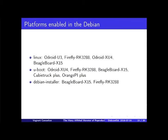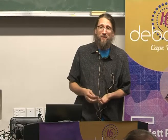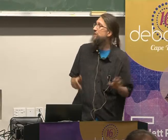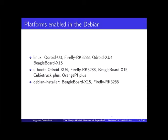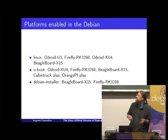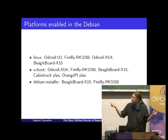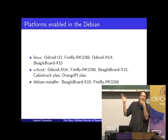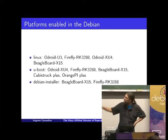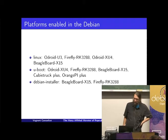As a result of all this, I ended up enabling a number of platforms in Debian that work out of the box or almost out of the box — got Linux support for the Odroid, Firefly, the Odroid XU4, and BeagleBoard X15. Enabled uBoot — which I'm the maintainer of — for a number of other boards, and enabled Debian installer support for some boards. Some boards already had some of this support, so I didn't have to do as much.